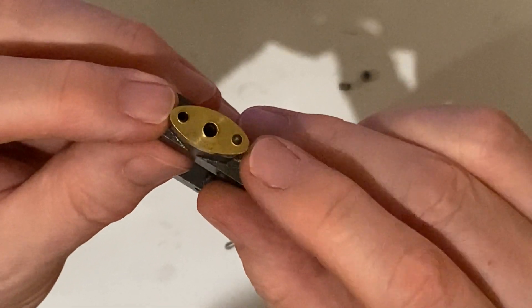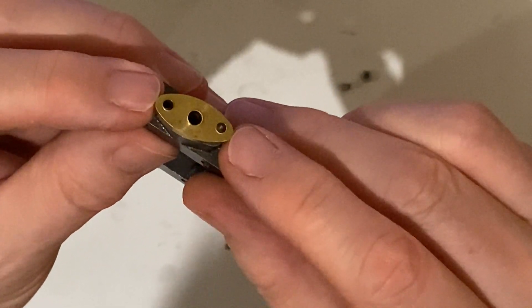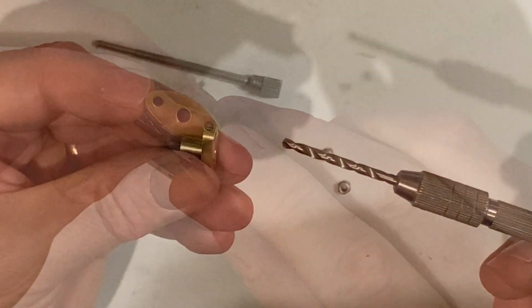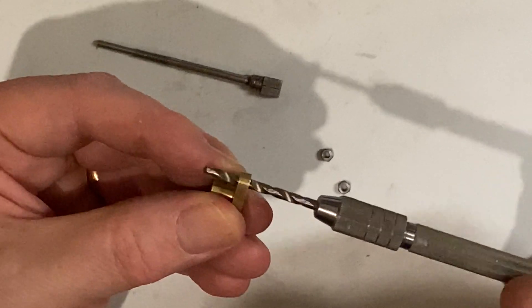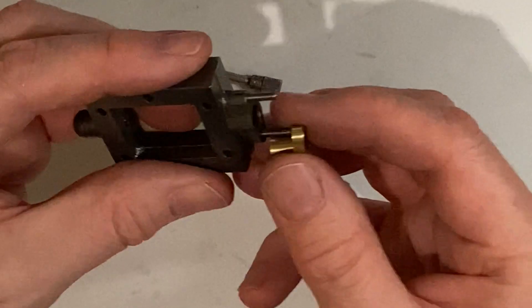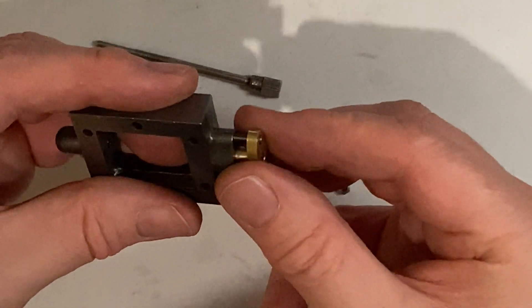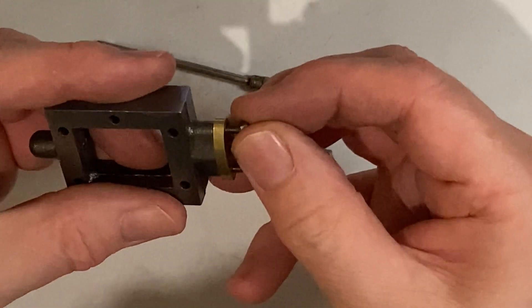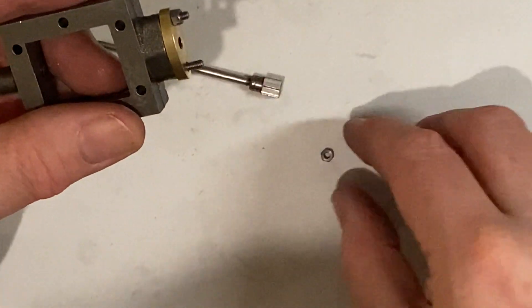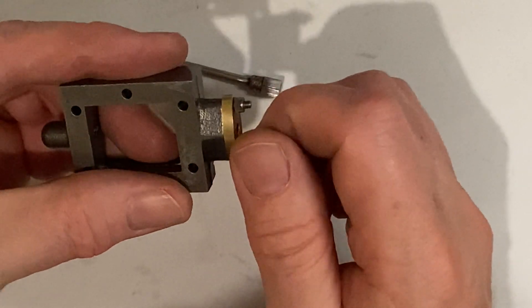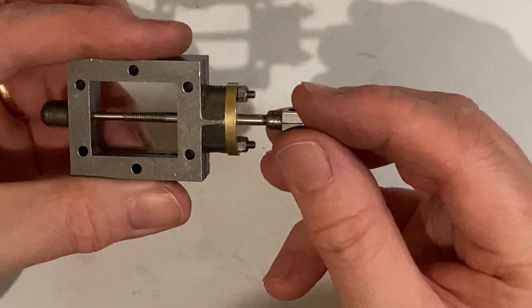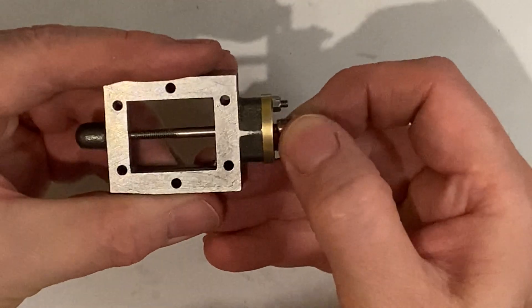I think this can be fixed fairly easily just by easing these holes a little bit. You can see there's also some burrs on there. I just took the holes out with a drill in a pin vise. The drill was about 0.1 millimetre oversized so just easing them a tiny fraction. Now we put the gland back on followed by the gland nuts. Now we can see that it fits quite nicely.